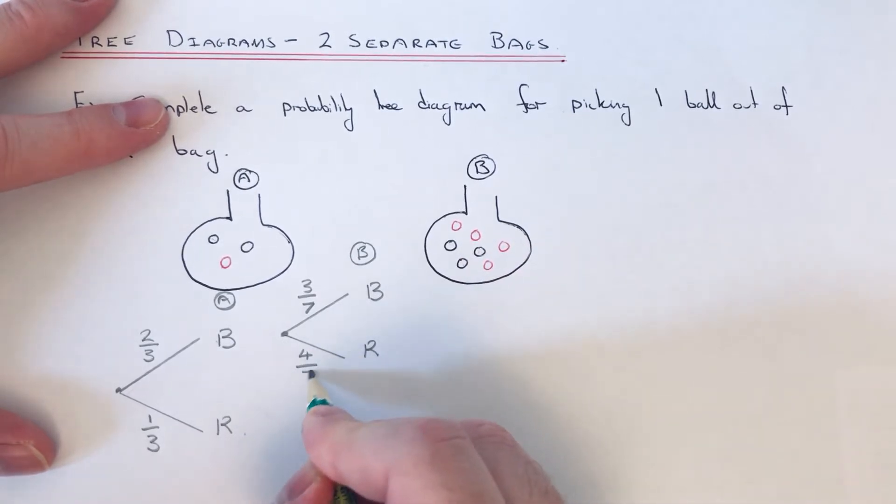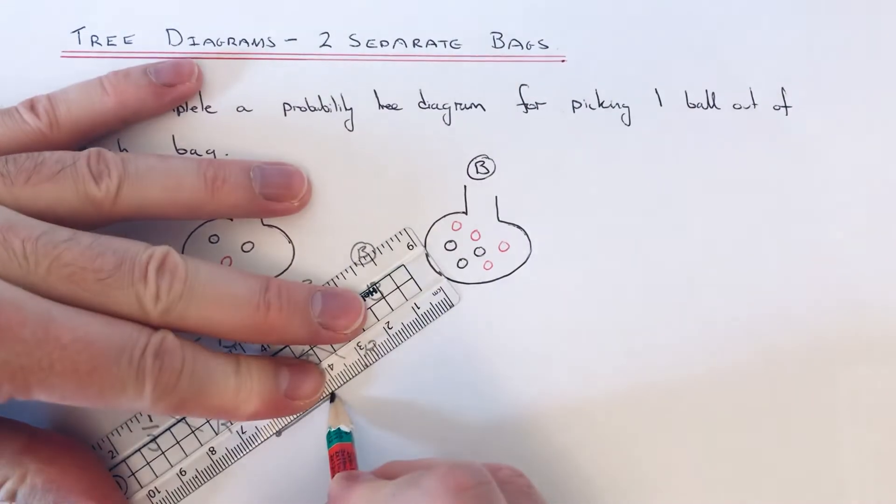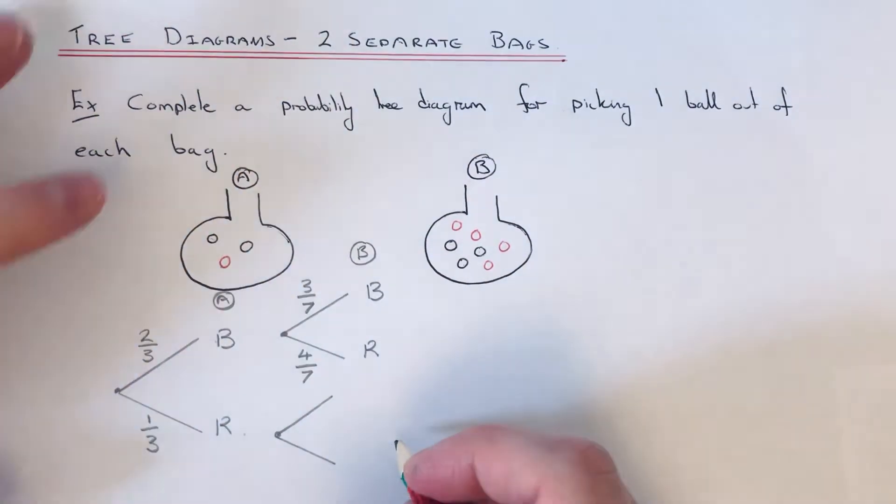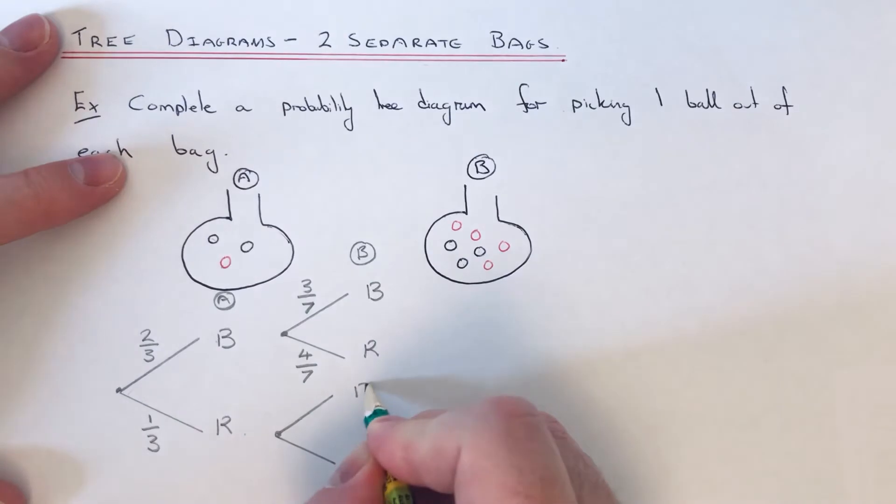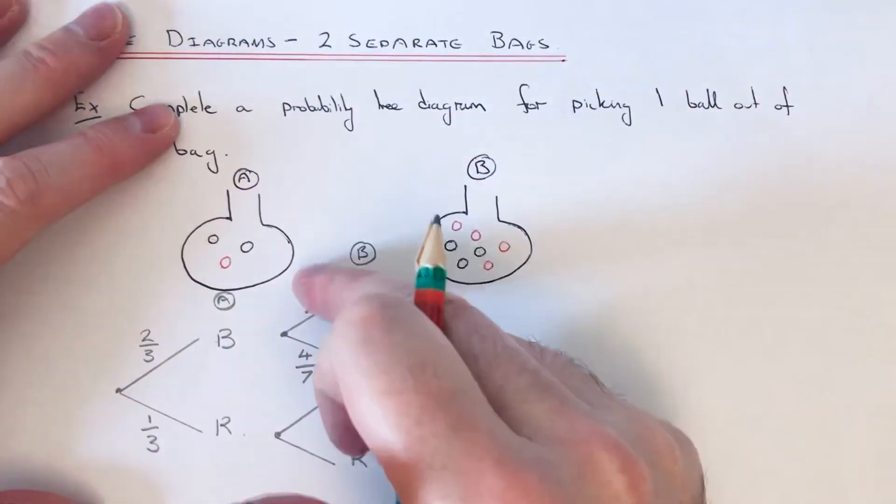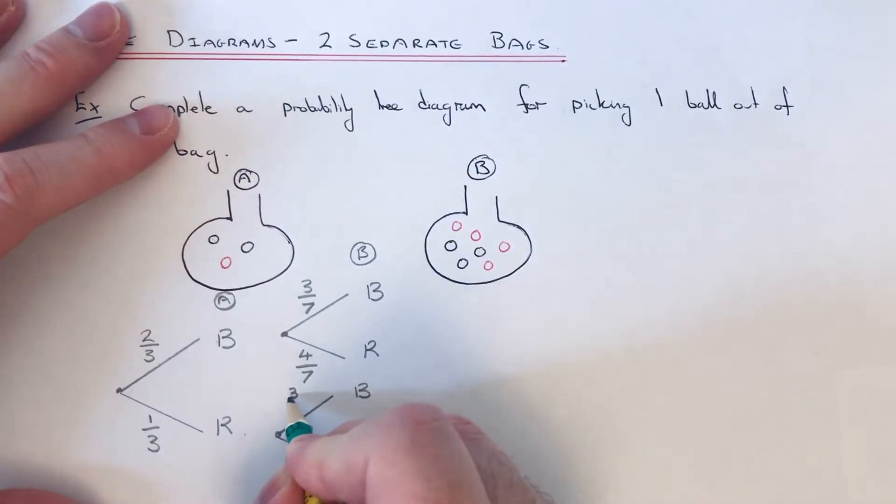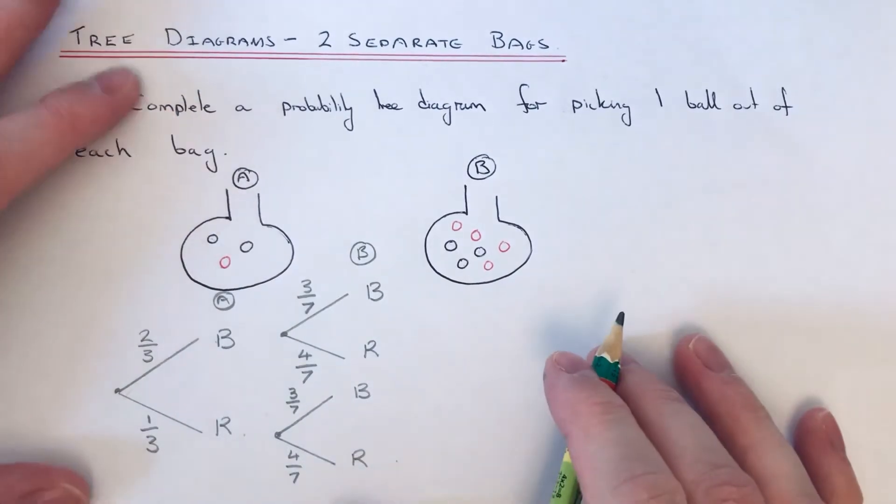And then we just need to complete the bottom route as well. So we picked out a red out of bag A, so this time we've got to pick out another ball from bag B. Out of bag B we can pick a black and a red, so it doesn't really matter what I picked out of bag A, it's still going to be the same for bag B. So I can repeat these two probabilities, so we get three sevenths and four sevenths. So that's our tree diagram complete.